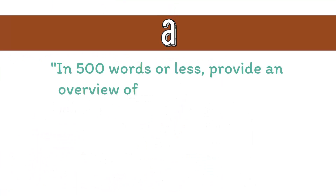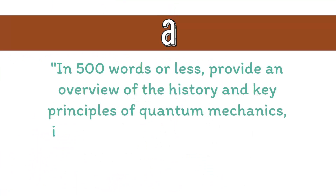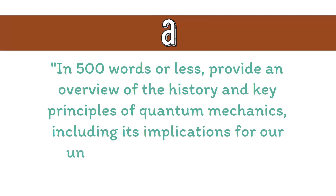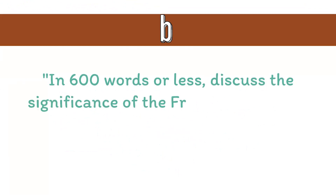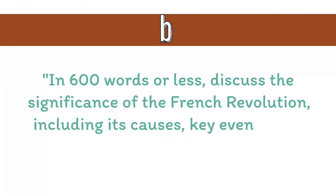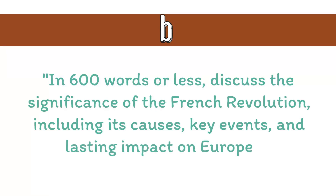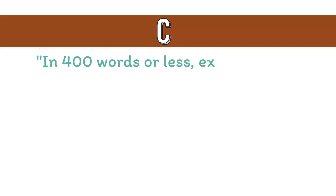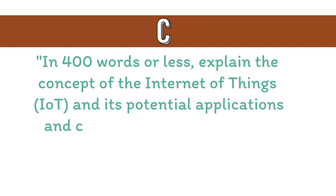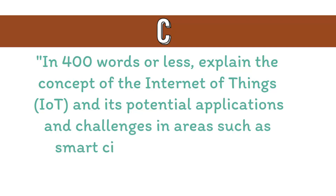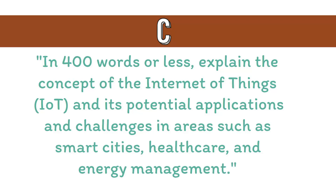A. In 500 words or less, provide an overview of the history and key principles of quantum mechanics, including its implications for our understanding of the nature of reality. B. In 600 words or less, discuss the significance of the French Revolution, including its causes, key events, and lasting impact on European politics and society. C. In 400 words or less, explain the concept of the Internet of Things (IoT) and its potential applications and challenges in areas such as smart cities, healthcare, and energy management.